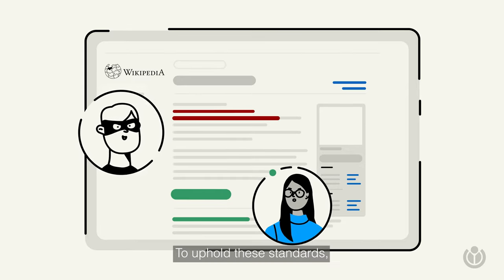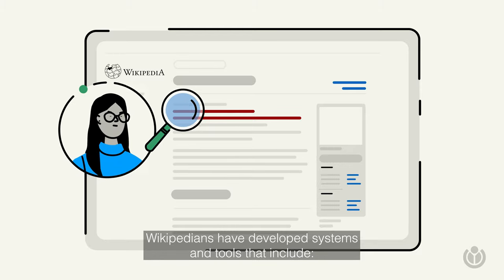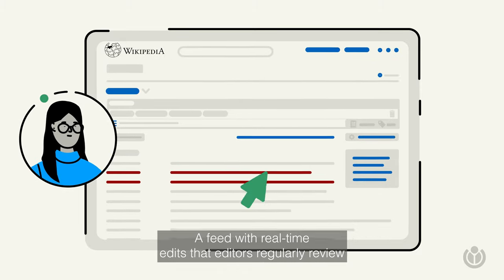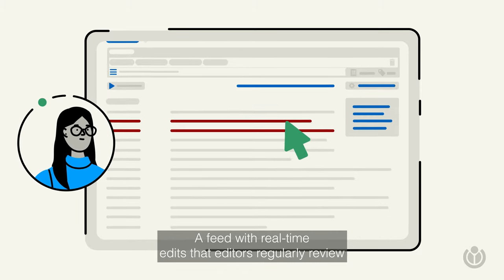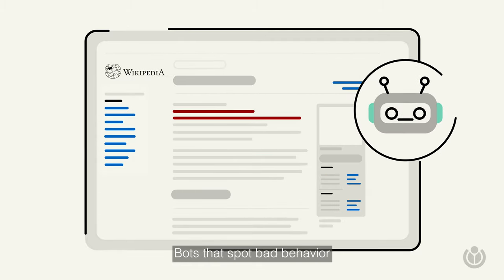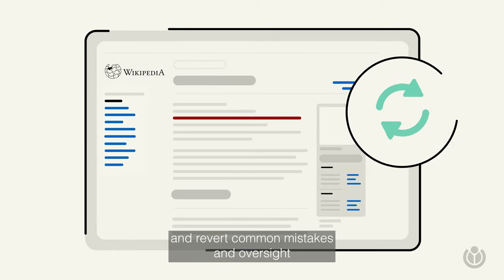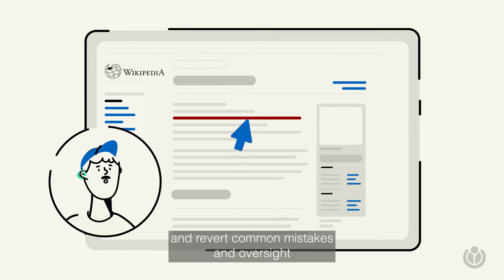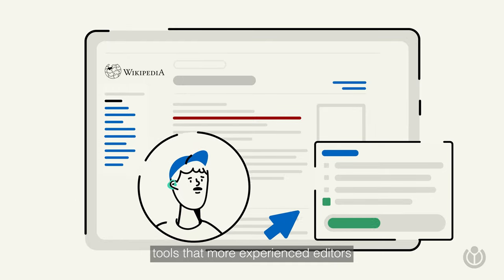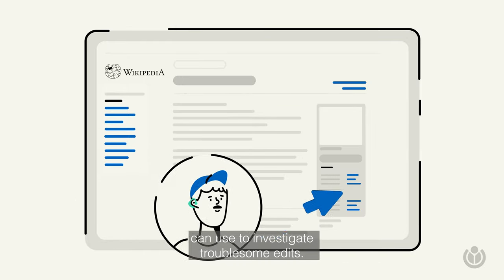To uphold these standards, Wikipedians have developed systems and tools that include a feed with real-time edits that editors regularly review, bots that spot bad behavior and revert common mistakes, and oversight tools that more experienced editors can use to investigate troublesome edits.